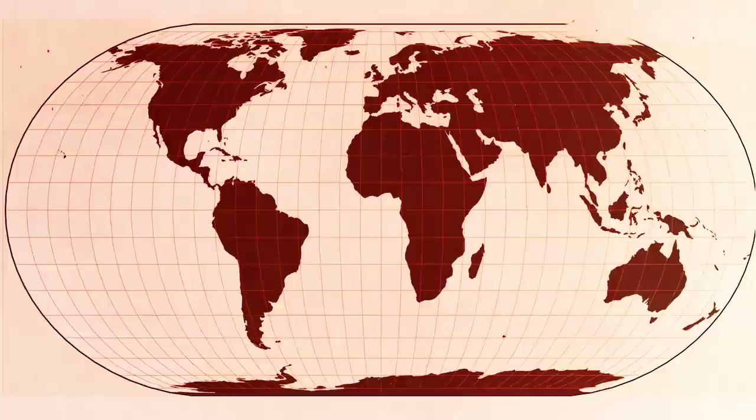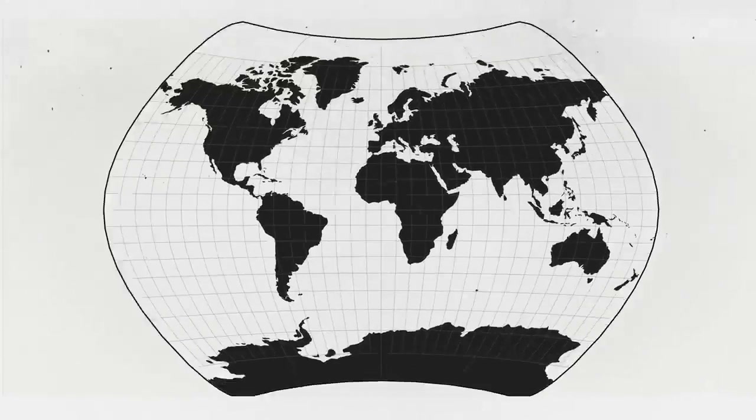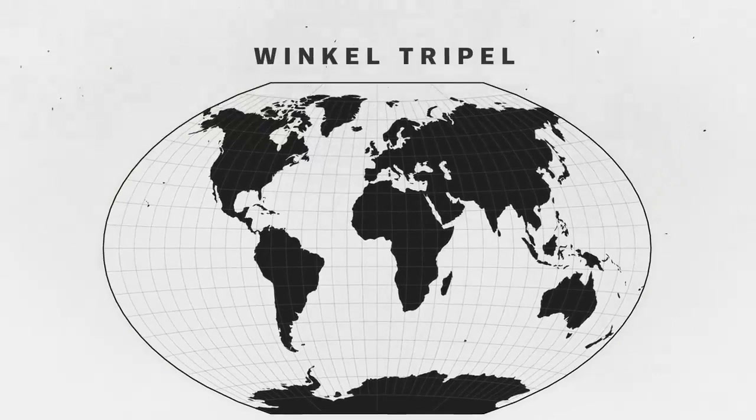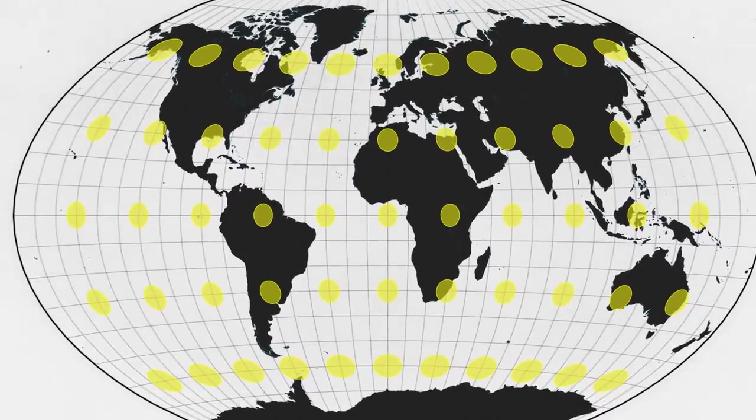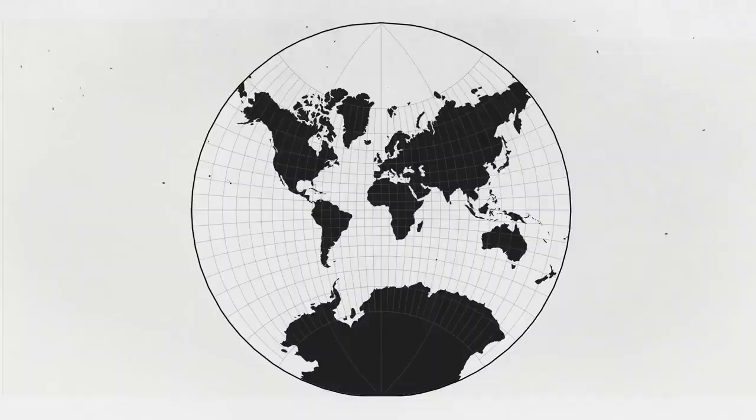Most modern cartographers have settled on a variety of non-rectangular projections that split the difference between distorting either size or shape. In 1998, the National Geographic Society adopted the Winkel Tripel projection because of its pleasant balance between size and shape accuracy. But the fact remains that there's no right projection. Cartographers and mathematicians have created a huge library of available projections, each with a new perspective on the planet, and each useful for a different task.